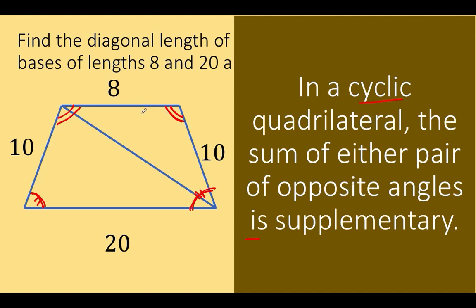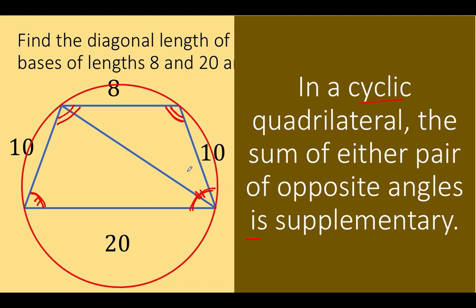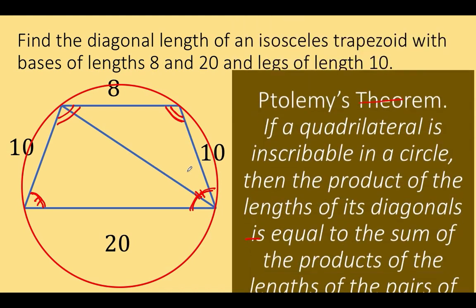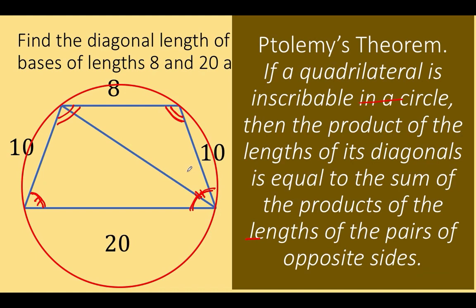When the opposite angles of an isosceles trapezoid are supplementary, we can conclude that the given quadrilateral is a cyclic quadrilateral from the converse of that statement. By showing that this quadrilateral is cyclic, it can be inscribed in a circle, and that is the necessary condition to apply Ptolemy's theorem — because the theorem says that if a quadrilateral is inscribable in a circle, then the product of its diagonals equals the sum of the products of its pairs of opposite sides.